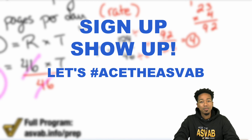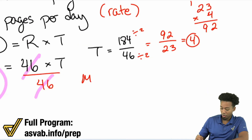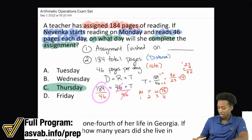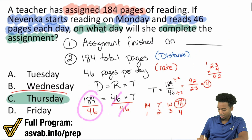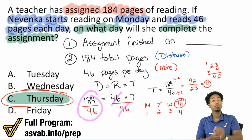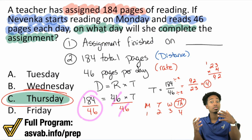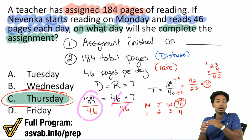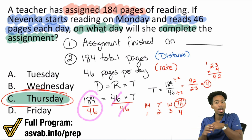Let's get back to the problem. Monday is the first day, Tuesday is the second, Wednesday is the third, and Thursday is the fourth — one, two, three, four. That's why Thursday is the correct answer. And if we were dealing with 1,500 pages, this strategy would be outstanding because we'd automatically get the number of days and just count from there.